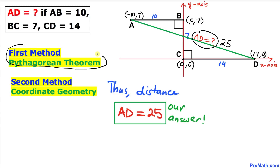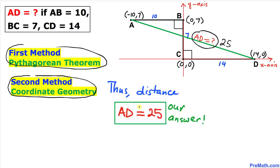As you can see, we have used two different methods — first the Pythagorean theorem, and second coordinate geometry — and in both cases we got the same answer: AD equals 25. That is our final answer. Thanks for watching, and please don't forget to subscribe to my channel for more exciting videos!